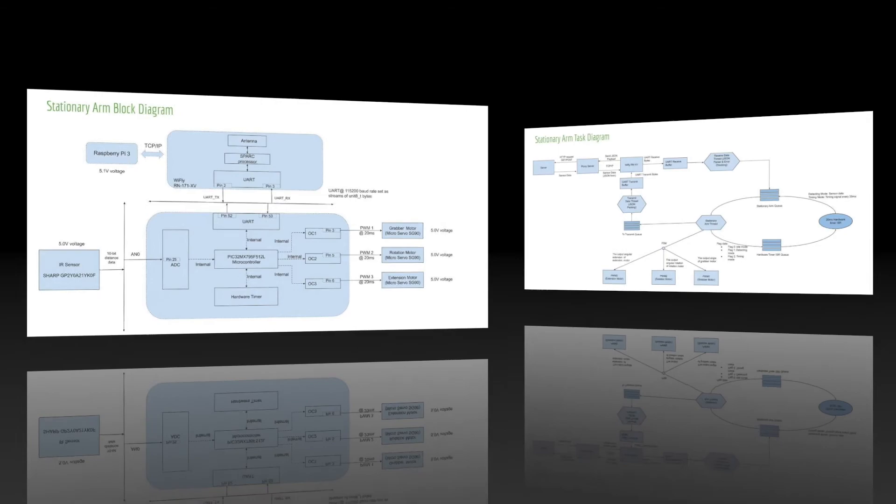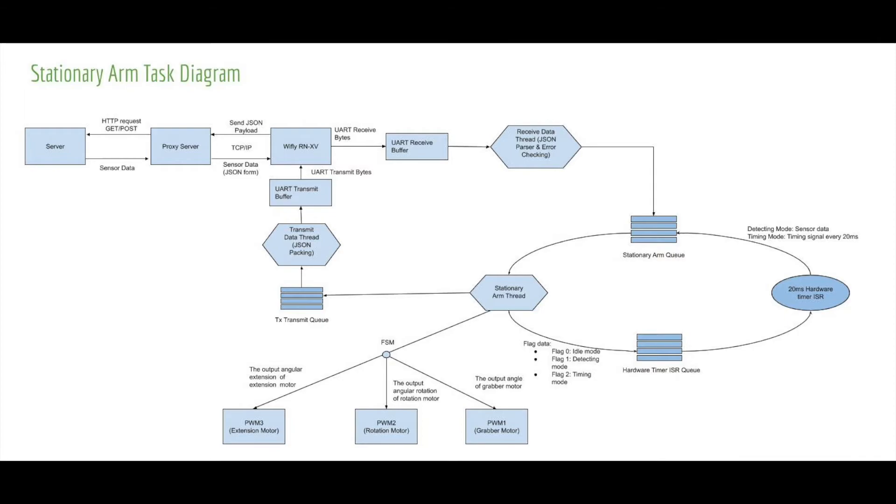Now, let's take a look at the arm software component through the task diagram. For threads, we have a stationary arm thread. This thread is responsible for controlling the arm model through three separate output compare modules. Before initiating the arm movement cycle which contains pick up, rotate, drop, and rotate back, this thread needs the distance information of the object from the IR sensor through the stationary arm queue, as well as the color of the object from the database through the received data thread, or RX thread. Once all needed information is acquired, the thread will control the arm through a finite state machine that enables it to pick up the object, rotate to the correct destination color box that matches the color of the object, drop the object into the box, and finally rotate back to the origin ready for the next object.